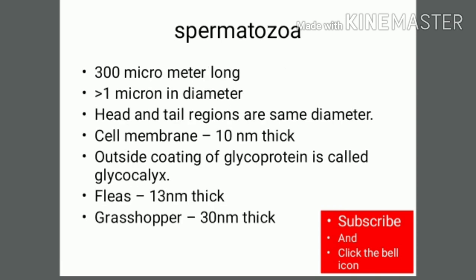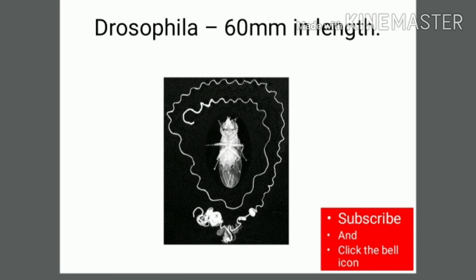The spermatozoa are 300 µm long and greater than 1 µm in diameter. The head and tail regions are of the same diameter. The cell membrane is 10 nm thick, and the outside coating of glycoprotein is called the glycocalyx. In fleas and grasshoppers, this coating is 30 nm thick. Drosophila spermatozoa, which can be visualized here, are 60 mm in length.